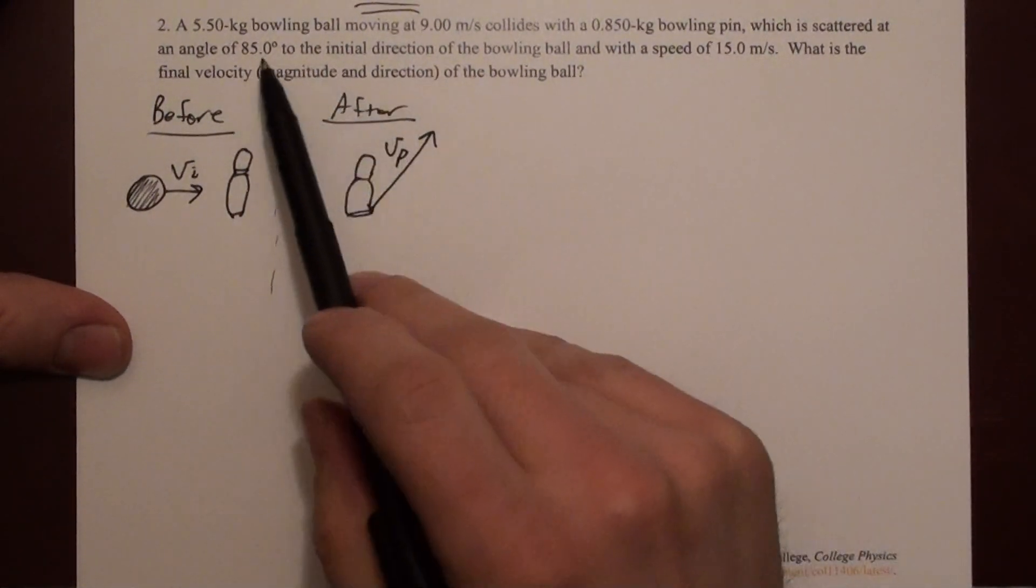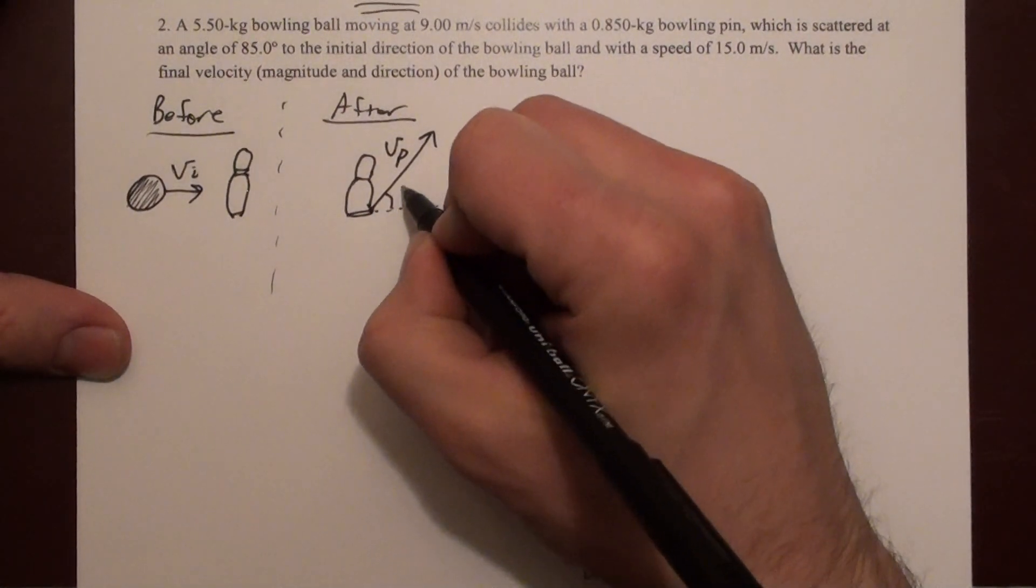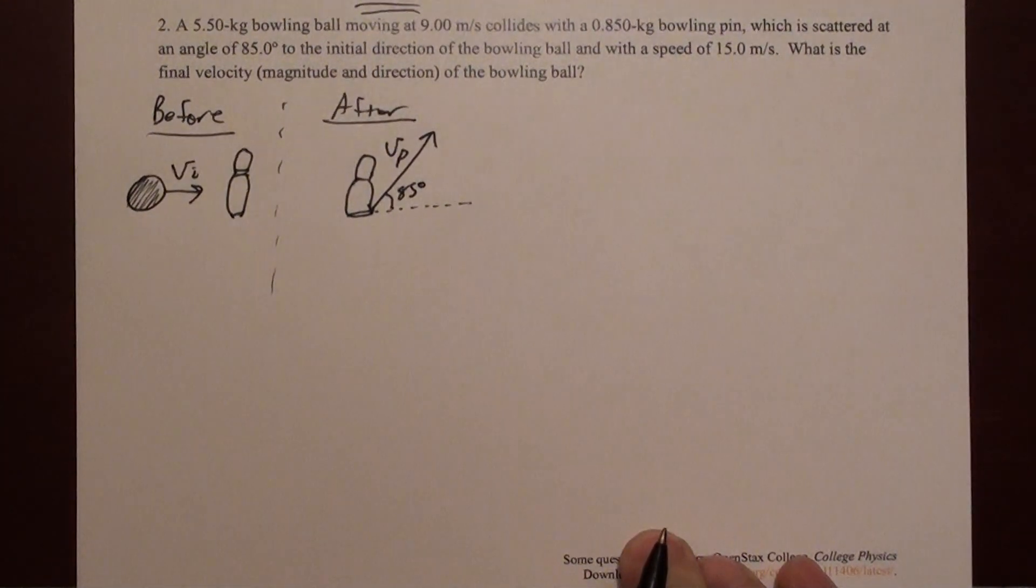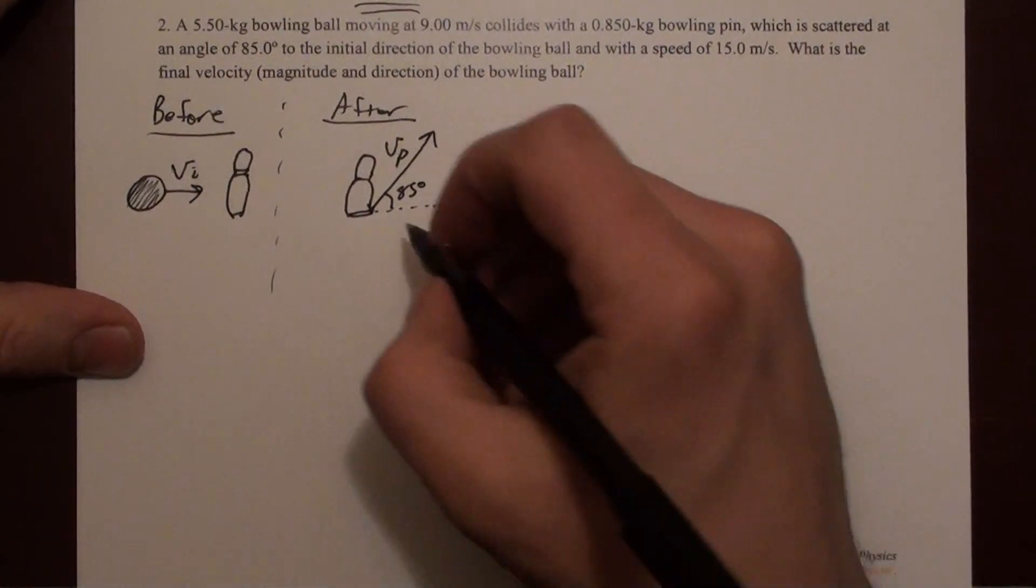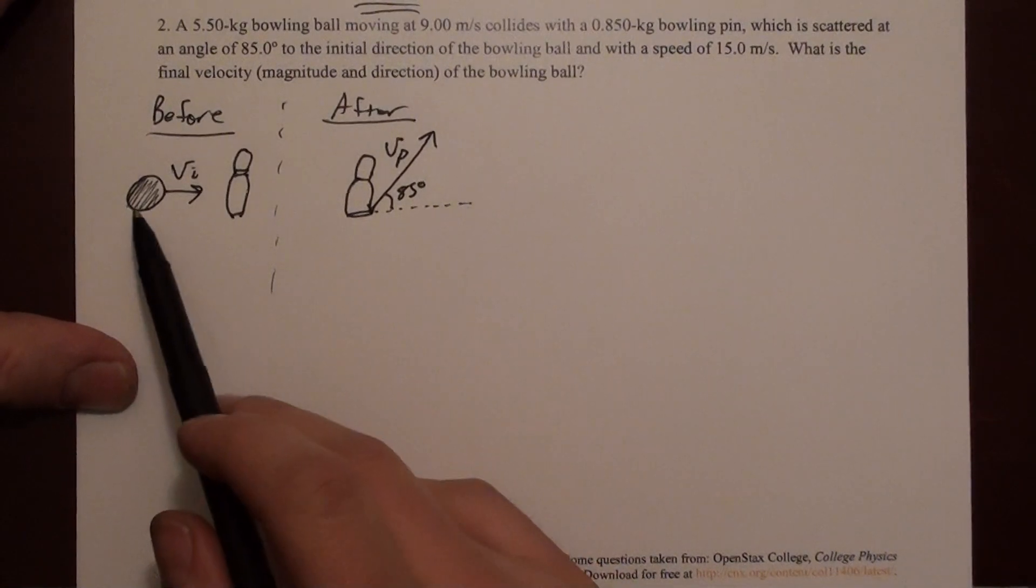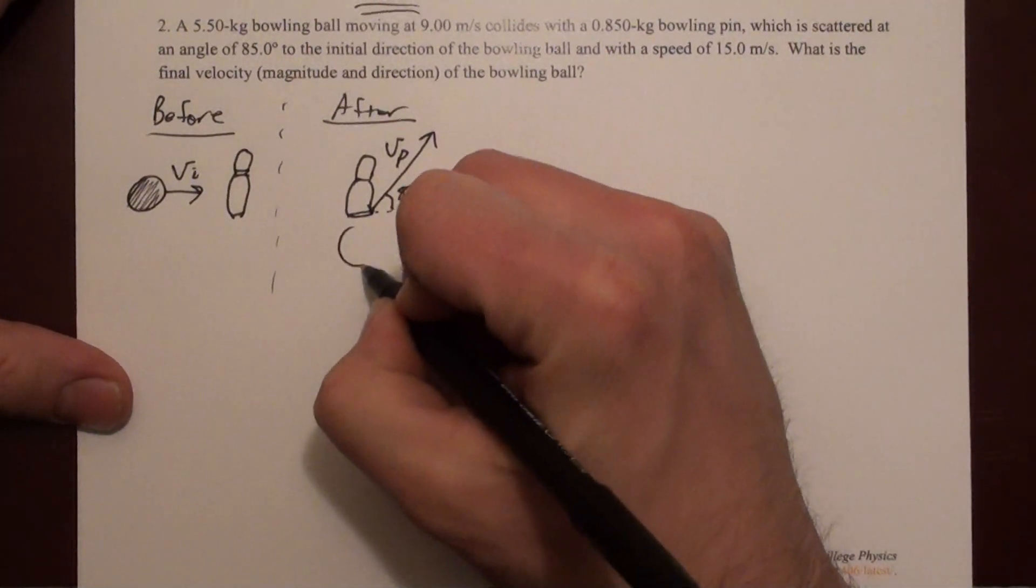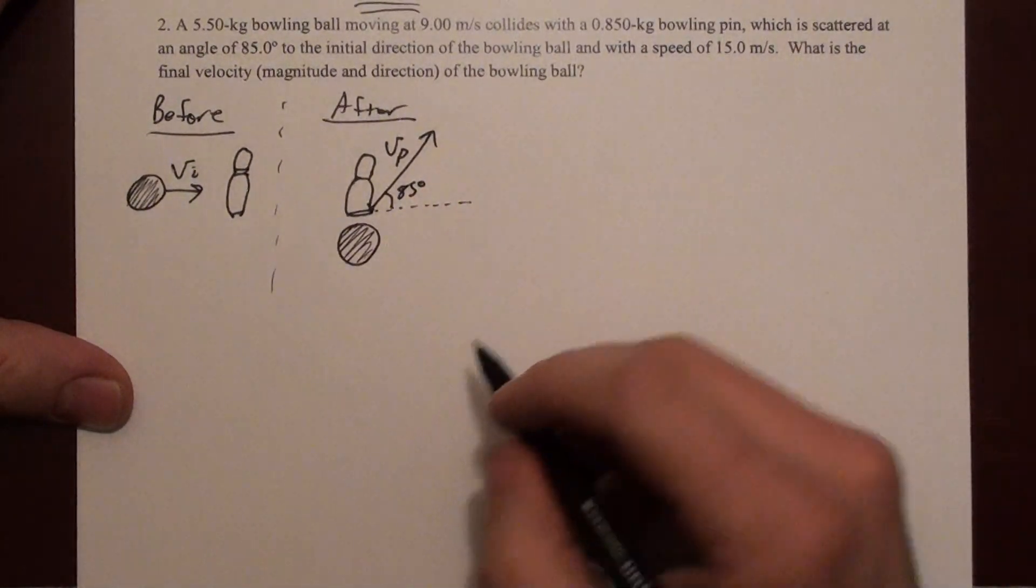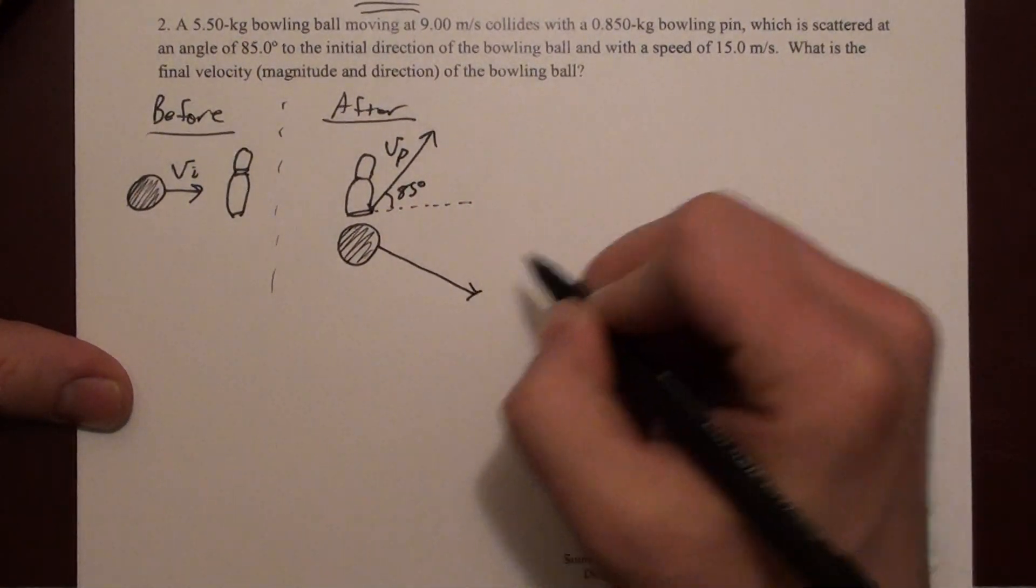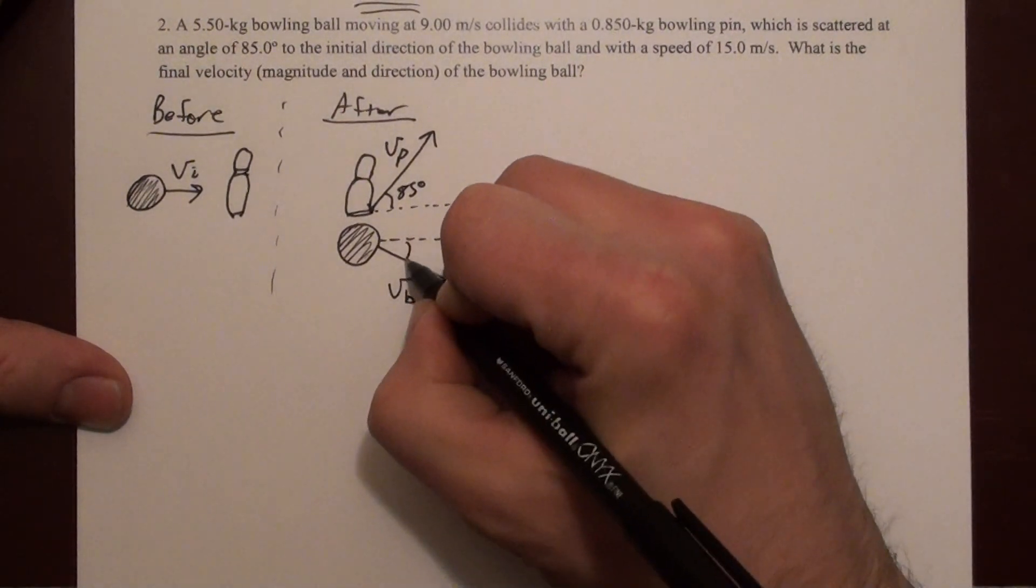They tell us it leaves at 85 degrees to the initial direction of the bowling ball. So initially, the bowling ball is traveling in this direction, so this angle is 85 degrees. I haven't drawn it quite steep enough, but since it's labeled, the math will work out. We can imagine what the bowling ball should do. It should still be going to the right. A bowling ball weighs a lot more than a bowling pin, so it's probably going to continue traveling to the right, but it will have bounced off slightly downward.